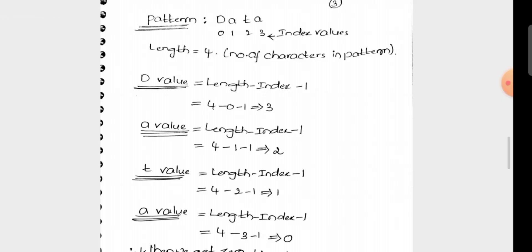For the pattern 'data': D is at index 0, A is at index 1, T is at index 2, and the last A is at index 3. So the pattern has 4 characters and the length is 4.